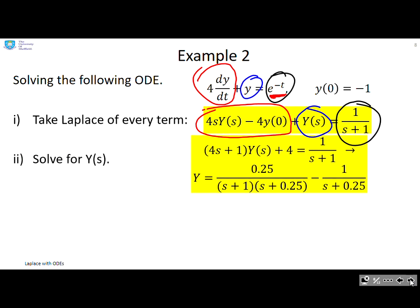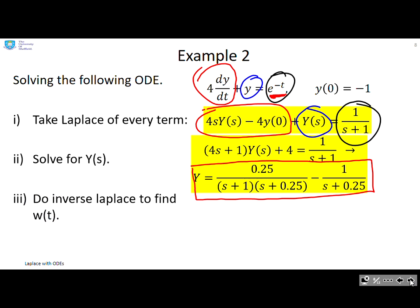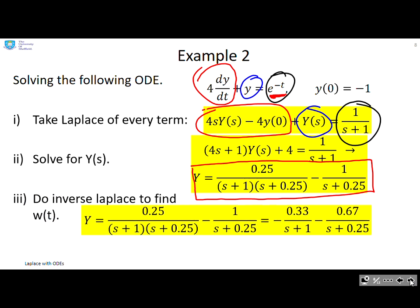Next, solve for y(s). So basically, I rearrange this expression to extract y on its own. And you see, this is what I get here: y(s) = 0.25/((s+1)(s+0.25)) - 1/(s+0.25). And then I need to do inverse Laplace, which requires a partial fraction expansion.